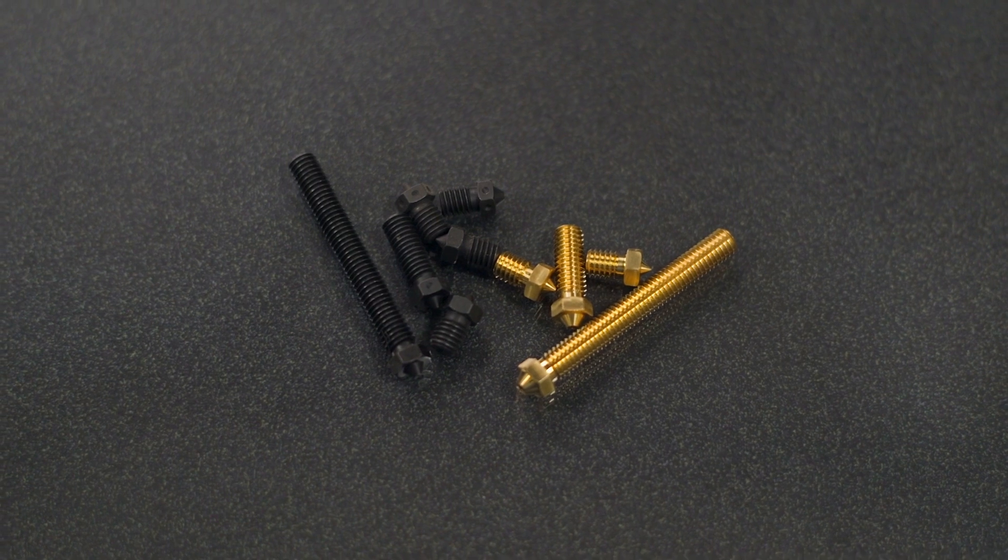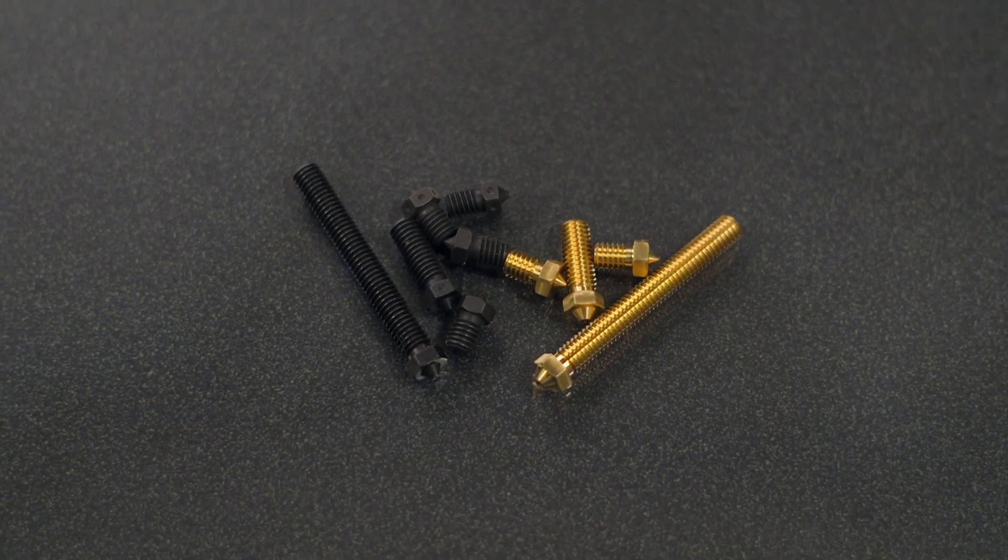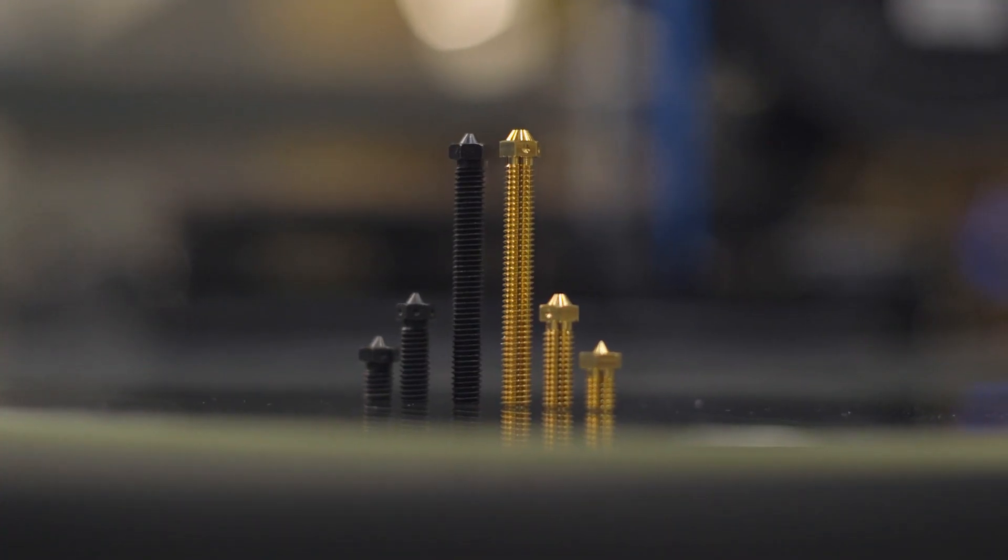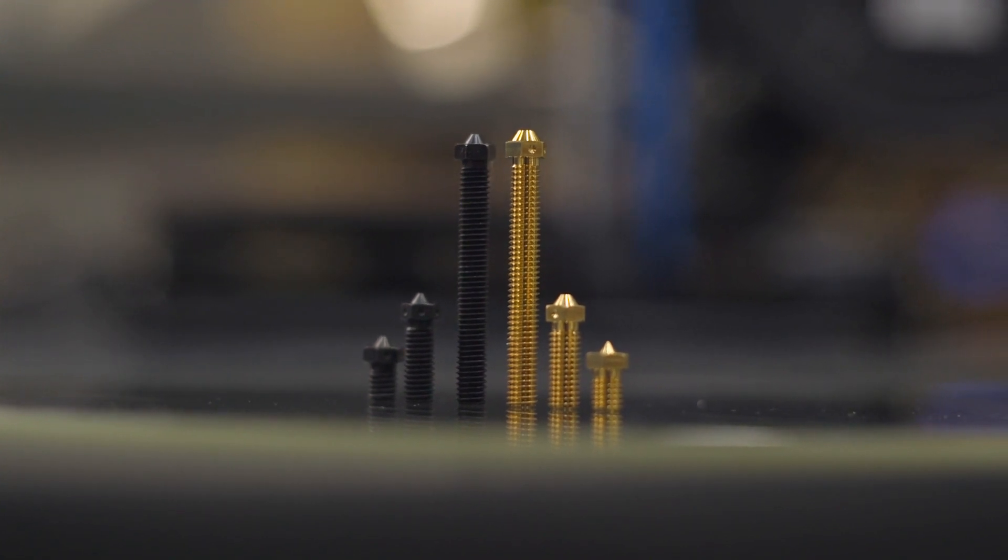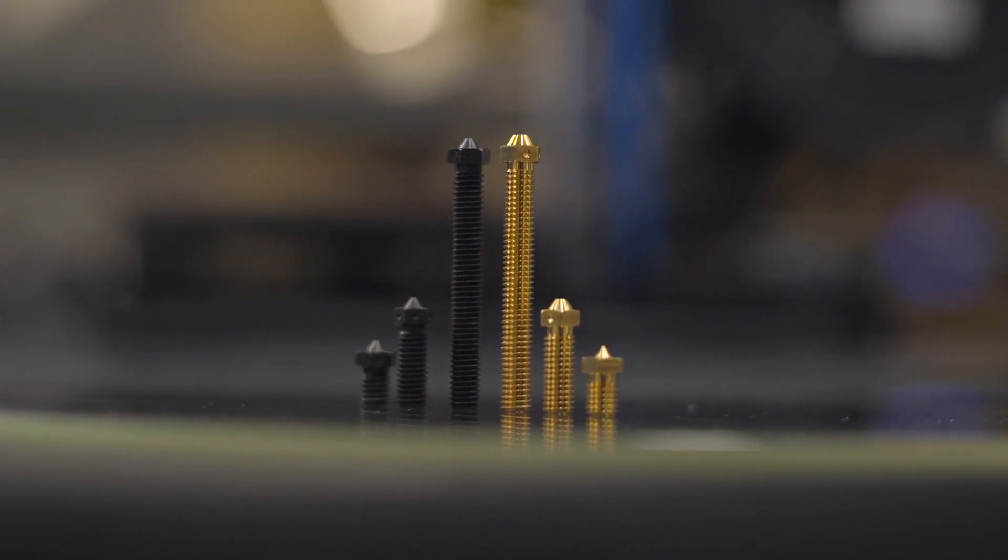Small, high-detailed models excel with a 0.15mm E3D nozzle, but for high-strength and quick-part turnaround, the 1.4mm super-volcano nozzle is the nozzle to beat.